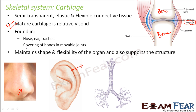Cartilage is also found covering the bones in movable joints. Wherever you have movable joints — whether synovial joints, hinge joints, or ball and socket joints — in all of those movable joints the bones are covered by a layer of cartilage, like you see here.